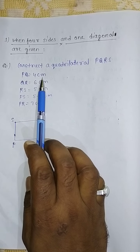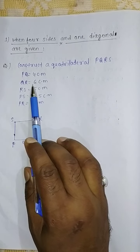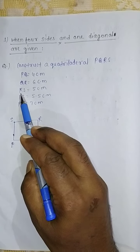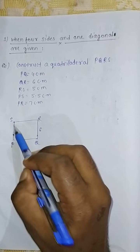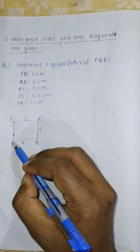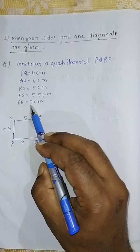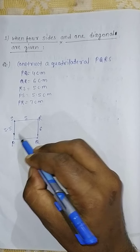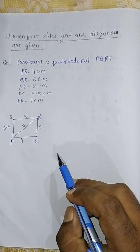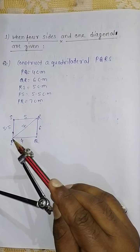The given measurements are: PQ equals 4 cm, QR equals 6 cm, RS equals 5 cm, PS equals 5.5 cm, and PR (the diagonal) equals 7 cm. PR is the diagonal which we have to draw. Along the line PR, two triangles are formed: triangle PSR and triangle PQR.